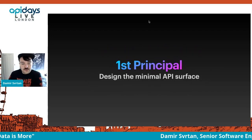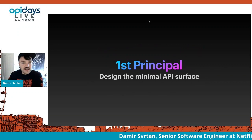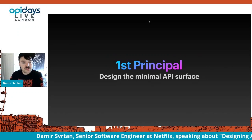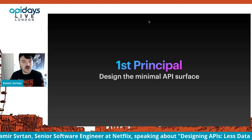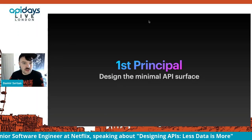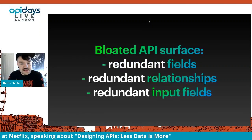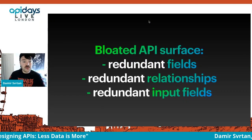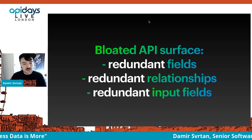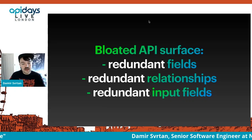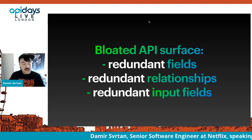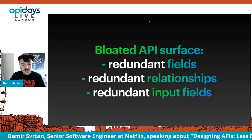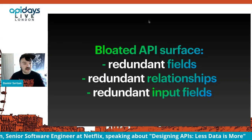For the first principle — designing the minimal API surface — I generally see a pattern where developers try to be speculative about what's going to be needed in the future, so they often overbuild their APIs. I'm going to break this into three patterns of a bloated surface that I usually see: first, building redundant APIs with redundant fields; then redundant relationships; and then redundant input fields.